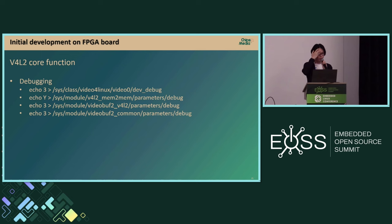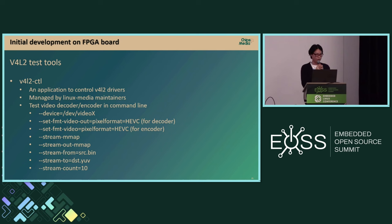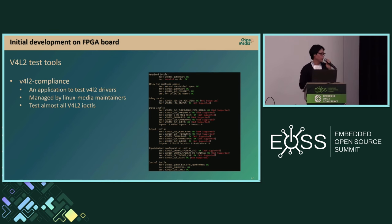These are some debugging options for the V4L2 core. You can add the debug level in the module parameter. You can also test V4L2 using the v4l2-ctl program — an open source application to control V4L2 drivers, managed by Linux media maintainers. You can test the decoder and encoder using command line options. I also use the v4l2-compliance program, also open source and managed by Linux media maintainers, which tests almost all V4L2 IOCTLs. The sample result from v4l2-compliance shows whether your IOCTL implementation is correct.